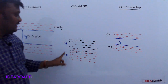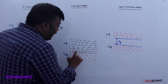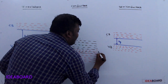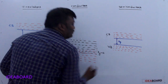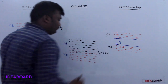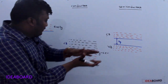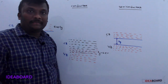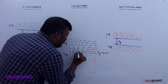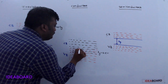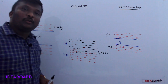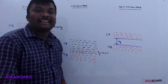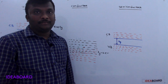In conductors, the conduction band and valence band are overlapped with each other, so the energy gap value is 0 electron volt. Some valence and conduction bands are combined together, so the electrons are free to move and they conduct electricity.